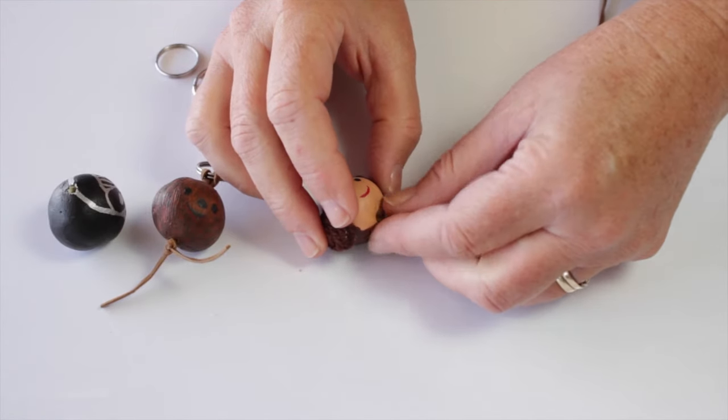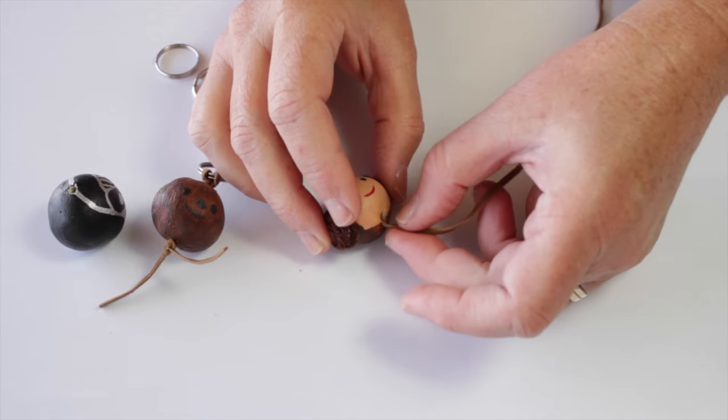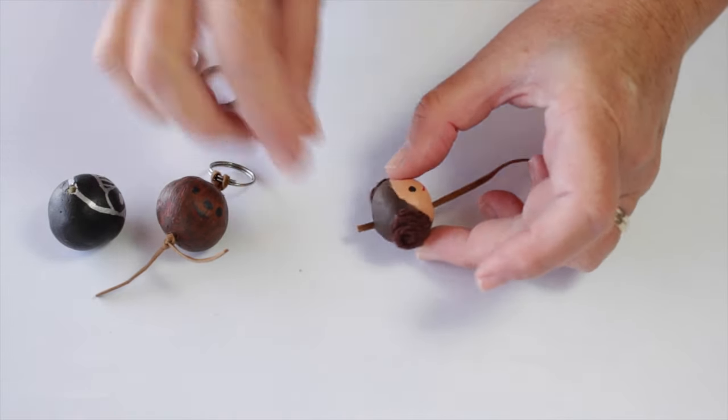Thread the brown leather through the bead hole, then thread the end back through the hole, making a loop at the top of the bead.